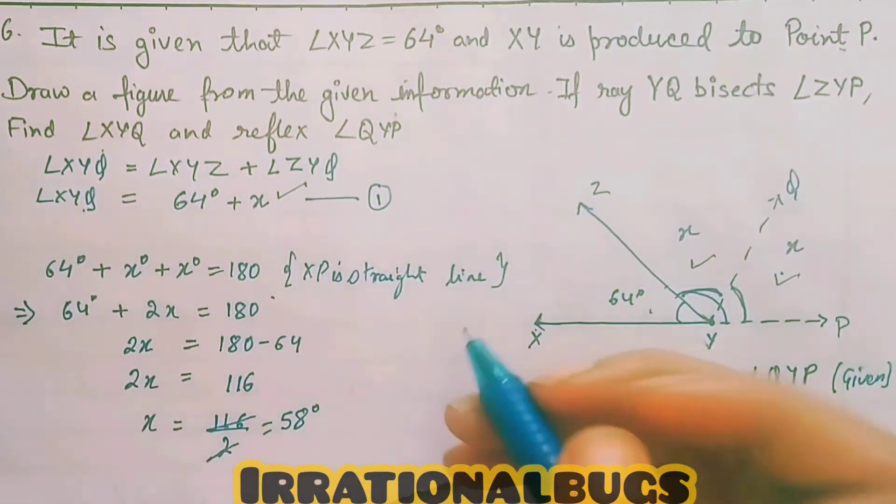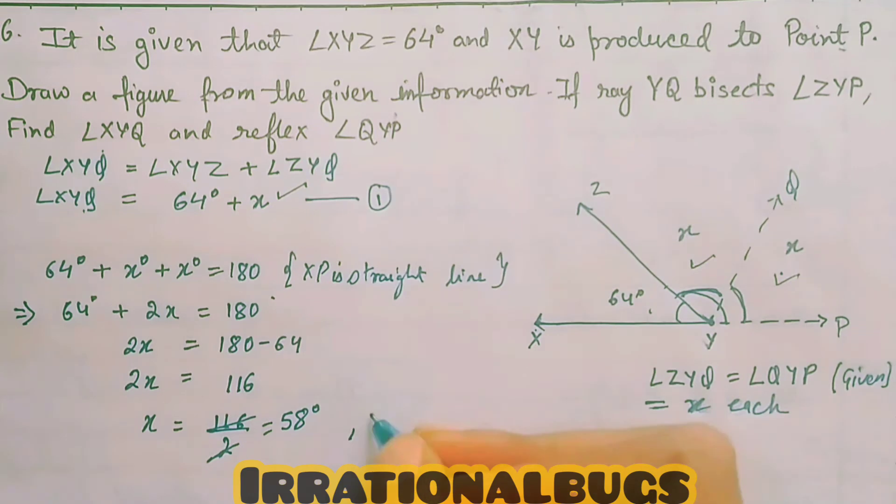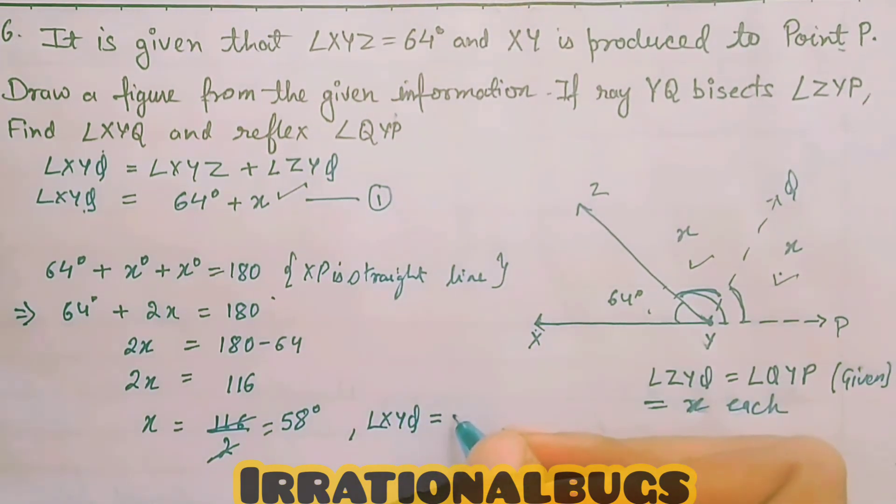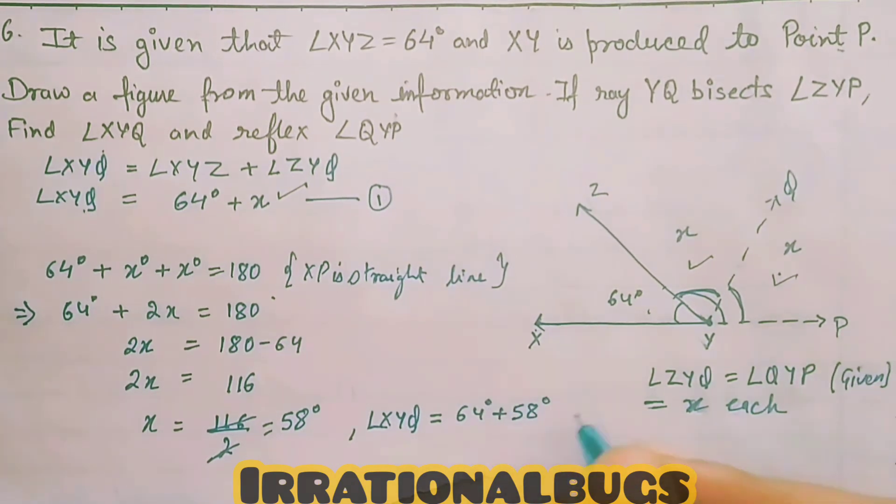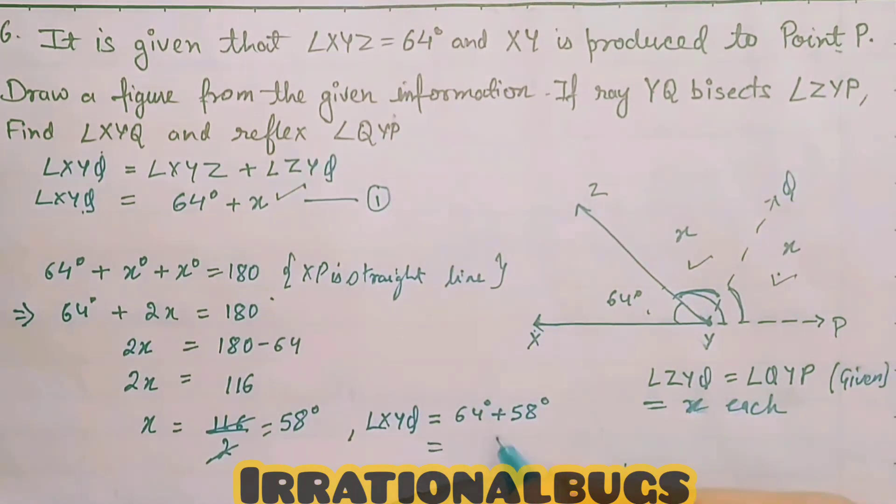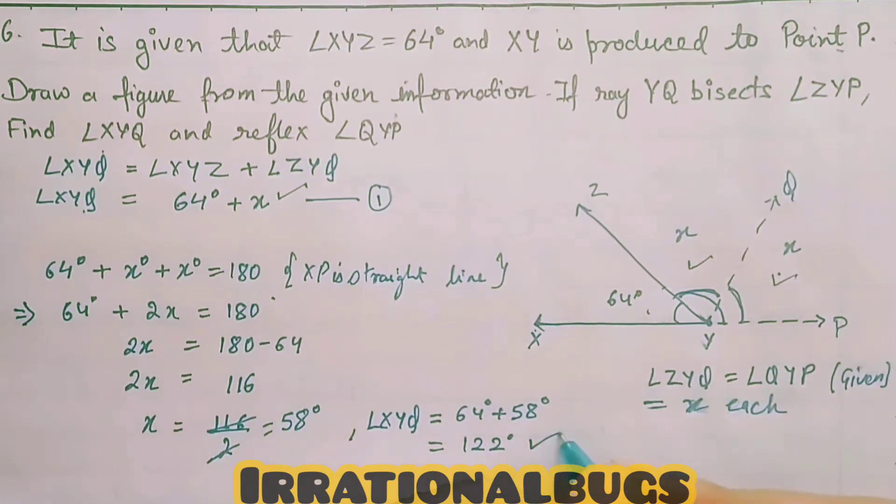X हमारे पास 58 आ गया है. अब हम find करते हैं angle X, Y, Q जिसकी value हमारे पास आ जाएगी 64 degrees plus 58 degrees. दोनों का sum हो जाएगा 122 degrees.